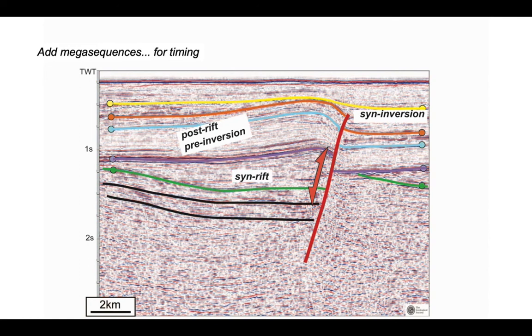Below that, the interval thickness between the orange and blue horizon is more or less constant, as is the thickness between the blue and the mauve horizons. So that looks like it's a pre-kinematic succession with respect to the inversion.